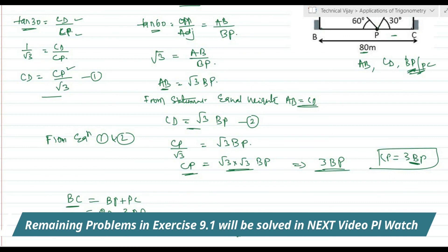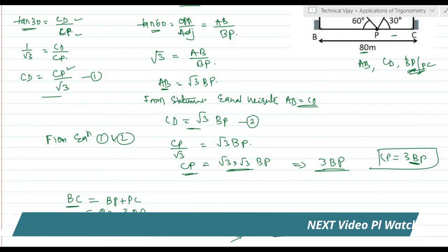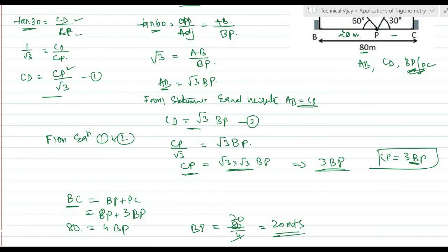Therefore BP equals 20 meters and CP equals 3 into 20 equals 60 meters, confirming BP plus CP equals 80 meters total. The height of each pole can be found by substituting back: AB equals root 3 into BP equals 20 root 3 meters.